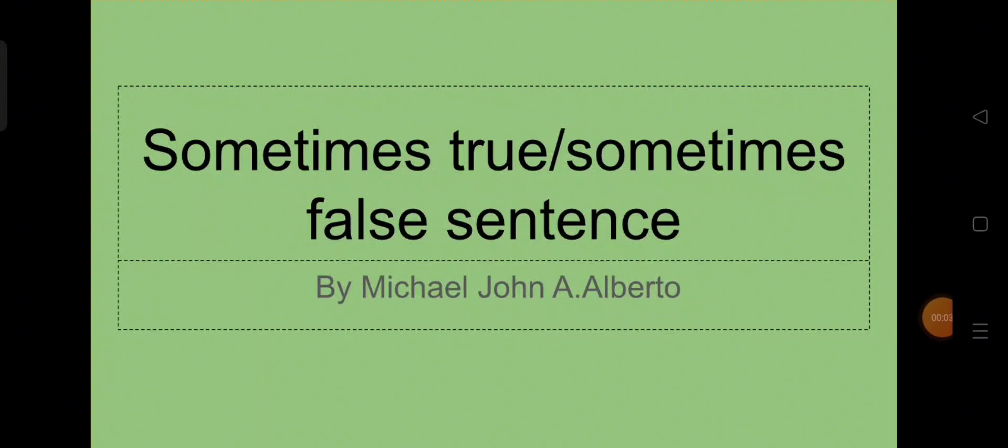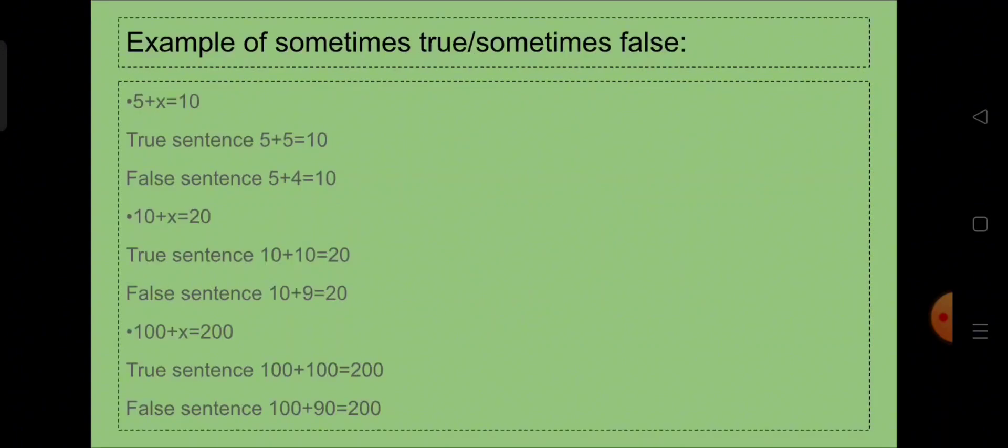Thank you and good day. Good day everyone. I am Michael John Alberto. I am from group 1h and today I will explain if the mathematical sentence is sometimes true or sometimes false. So let's have an example of sometimes true or sometimes false. We have 5 plus x equals 10. So to make it a true sentence, we will change the value of x in the mathematical sentence to 5 to make the sentence true. So the sentence will be 5 plus 5 equals 10. So that is true sentence.